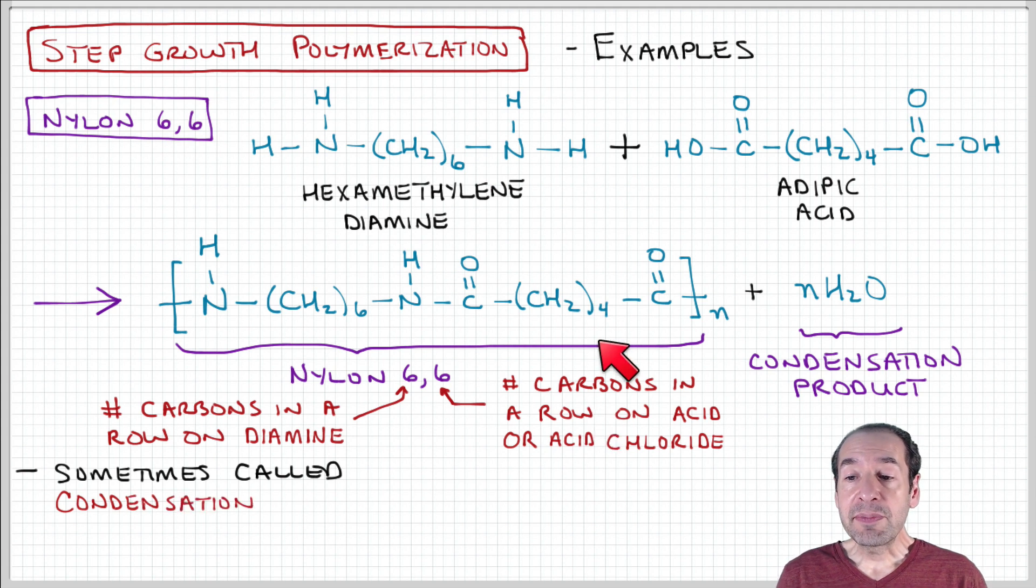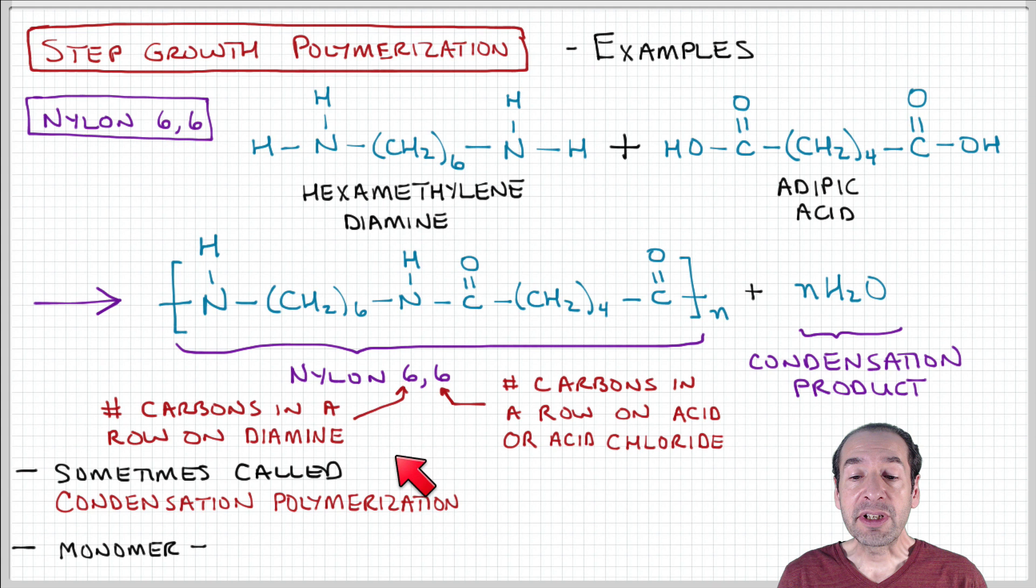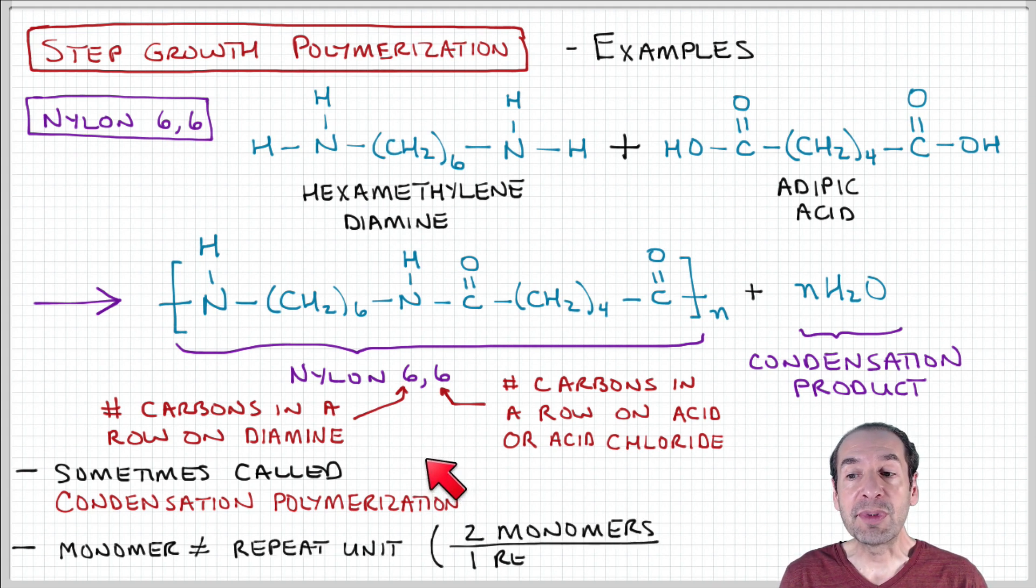Now you can see that by looking at this reaction mechanism that this is a condensation type reaction. So sometimes this is called condensation polymerization because you have this byproduct that's produced. The other thing I want to point out is that in this case, the repeat unit for the polymer is not the same thing as the monomer unit. You have two different monomer units that combine together to form the repeat unit. So there's a distinction here.